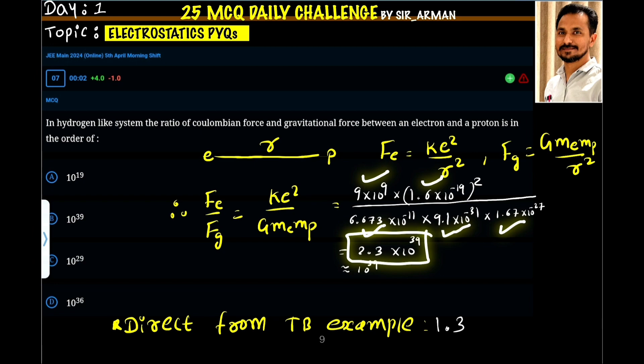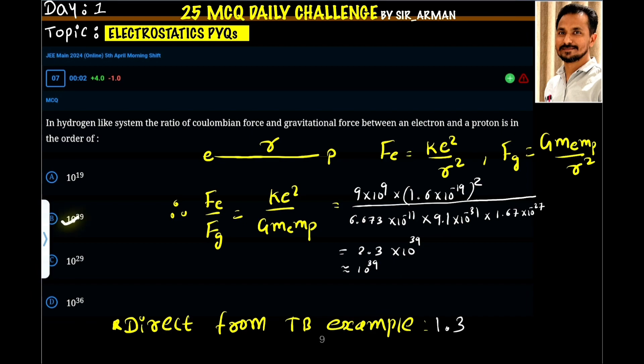If you solve this, you will get 2.3 into 10 raised to 39. We are interested in powers. So it is 10 raised to 39. So the correct option is B.